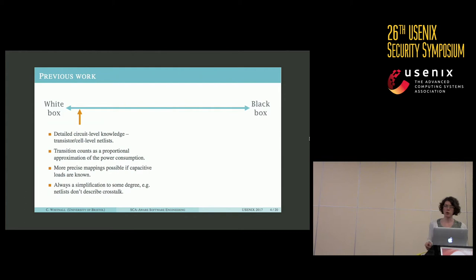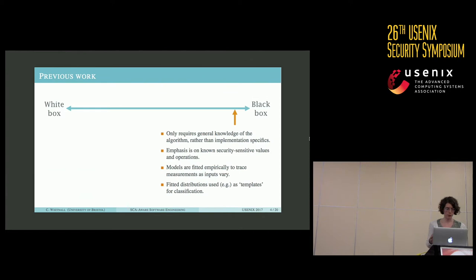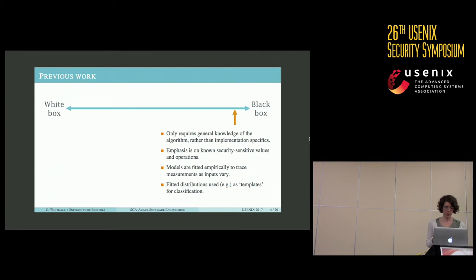It's important to remember that even the most comprehensive white box methods are necessarily simplifications to some degree, since phenomena such as crosstalk remain outside the scope of net lists. At the other end of the spectrum are methods which assume only a general knowledge of the algorithm rather than detailed information about the specific implementation. These tend to concentrate on modeling the side channel during the processing of known security-sensitive values or operations only. The usual way is to collect lots of traces relating to each possible value of the target intermediate and use these to estimate the trace distributions associated with those values, which can then be used as templates to classify new observations.